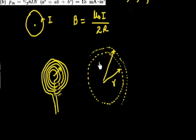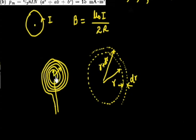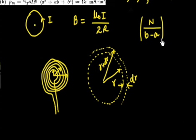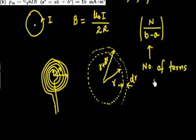The inner radius is A and the outer radius is B, and the total number of turns is N. In a radial length of (B − A), we have N turns. So the number of turns per unit length is N / (B − A).